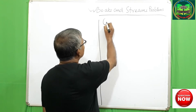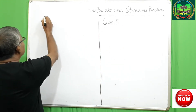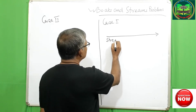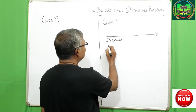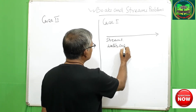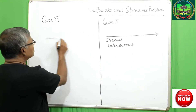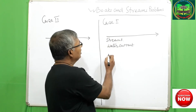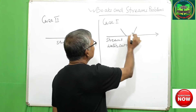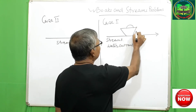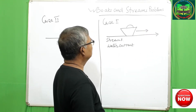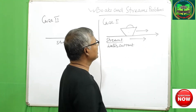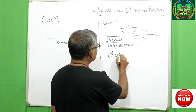Let us consider case 1 and case 2. In case 1, let a boat be floating in the direction of the current. That is, the stream and the boat are moving in the same direction. This is called downstream.